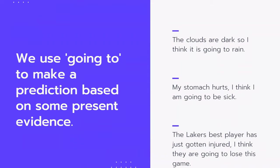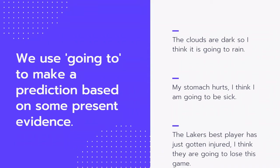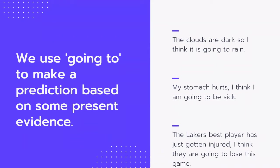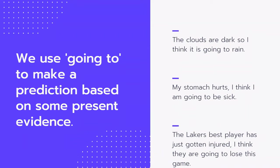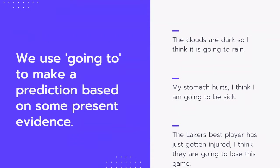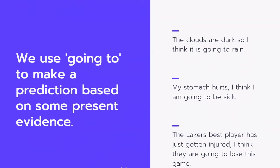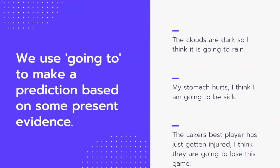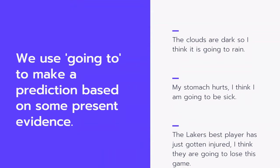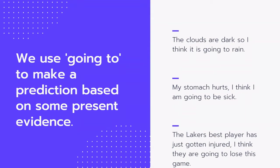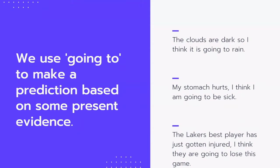On the other hand, we use going to to make a prediction based on present evidence. For example, 'The clouds are dark, so I think it's going to rain.' That's a prediction based on the fact that I can see the clouds getting dark — it's evidence. Another example: 'My stomach hurts, I think I'm going to be sick.'